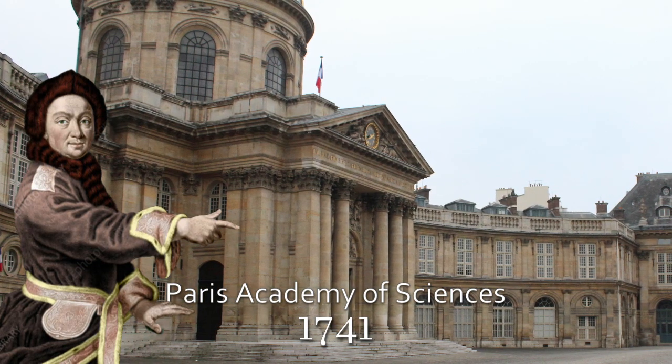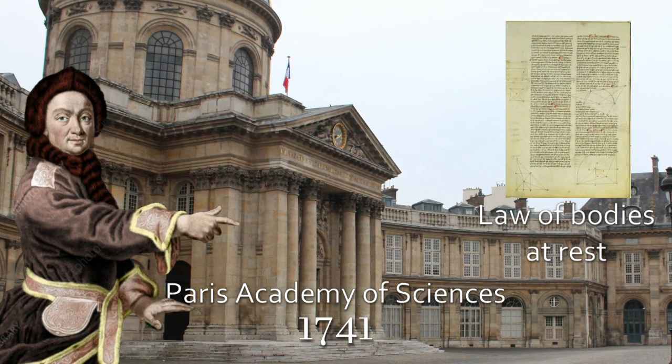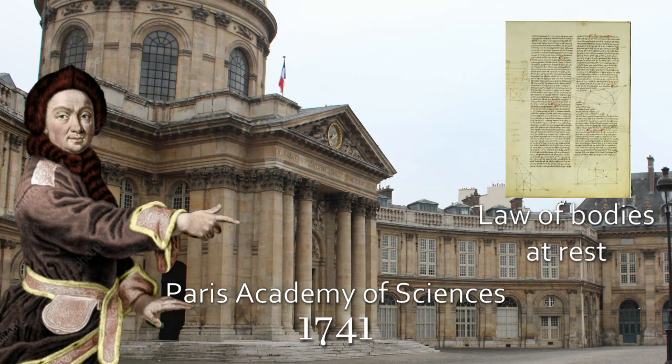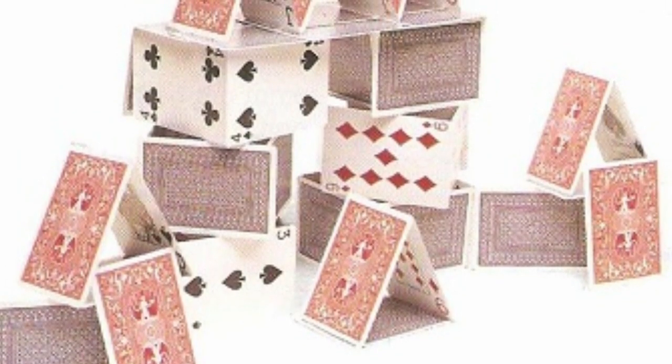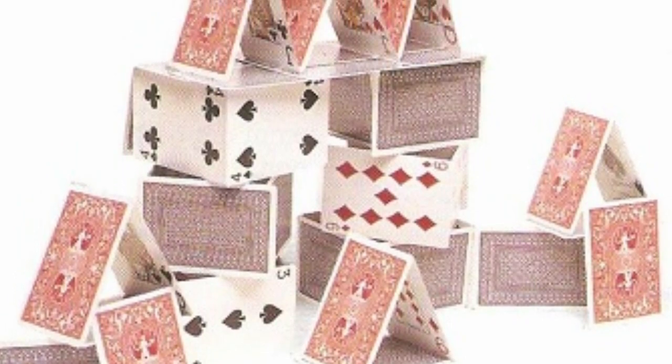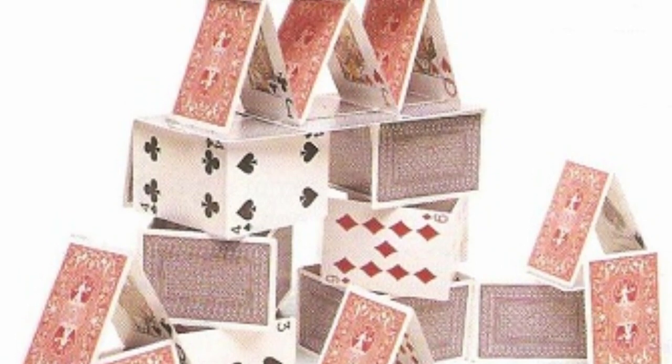In 1741 he submitted a paper titled Law of Bodies at Rest to the Paris Academy of Sciences, demonstrating that a system of stationary bodies naturally tend to adopt a position where any change would result in the smallest possible alteration in a quantity that he likened to action.